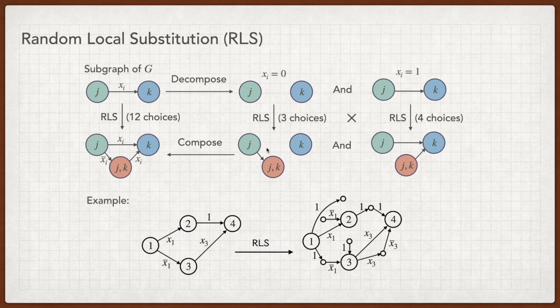For example, this edge appears if and only if XI equals 0. Thus, the label of the edge should be not XI. Therefore, we have three times four, which is twelve choices. Here we show a complete example of RLS. One can easily check that the RLS does not change the connectivity between any two nodes.